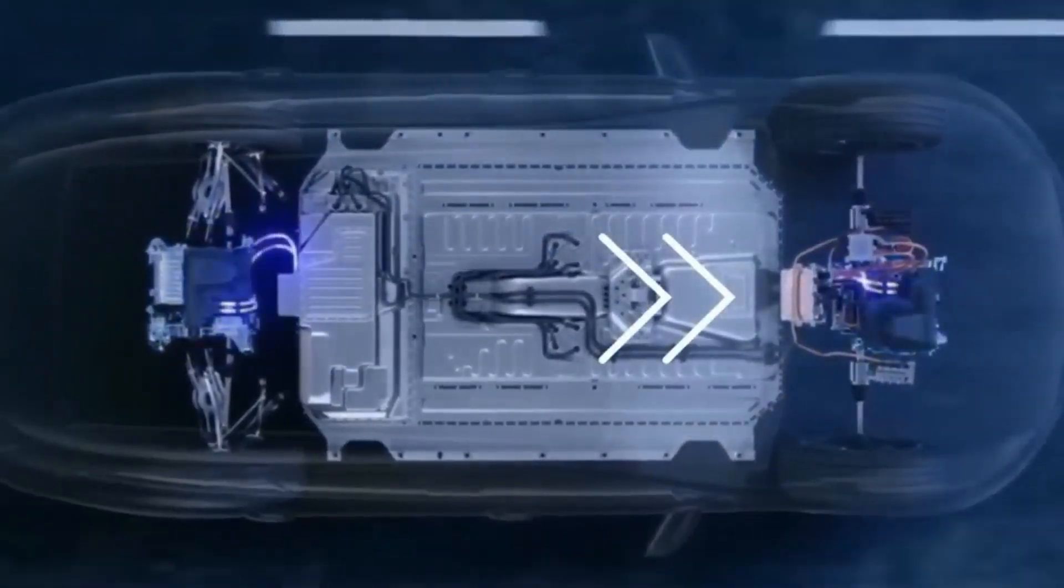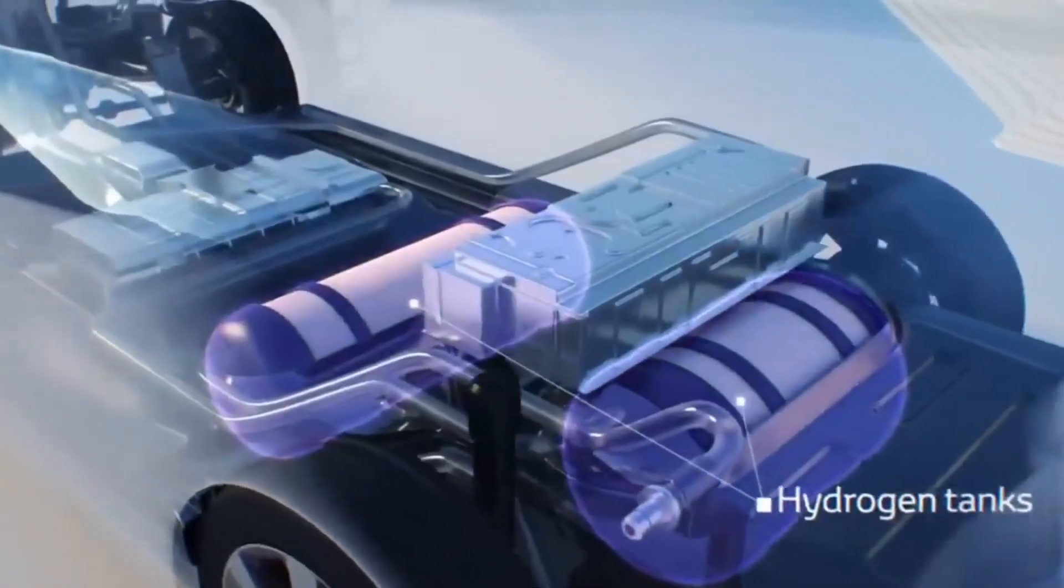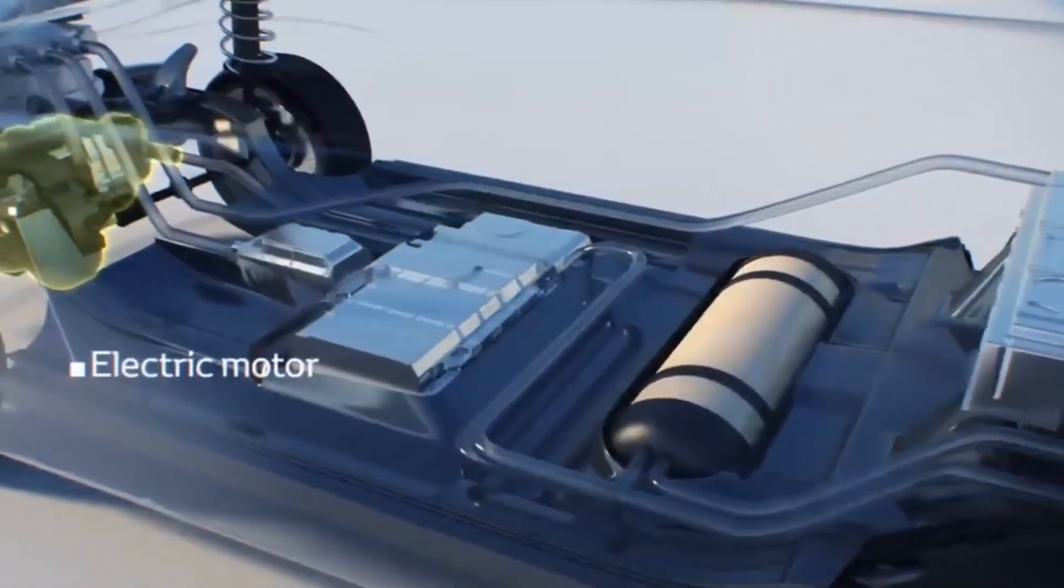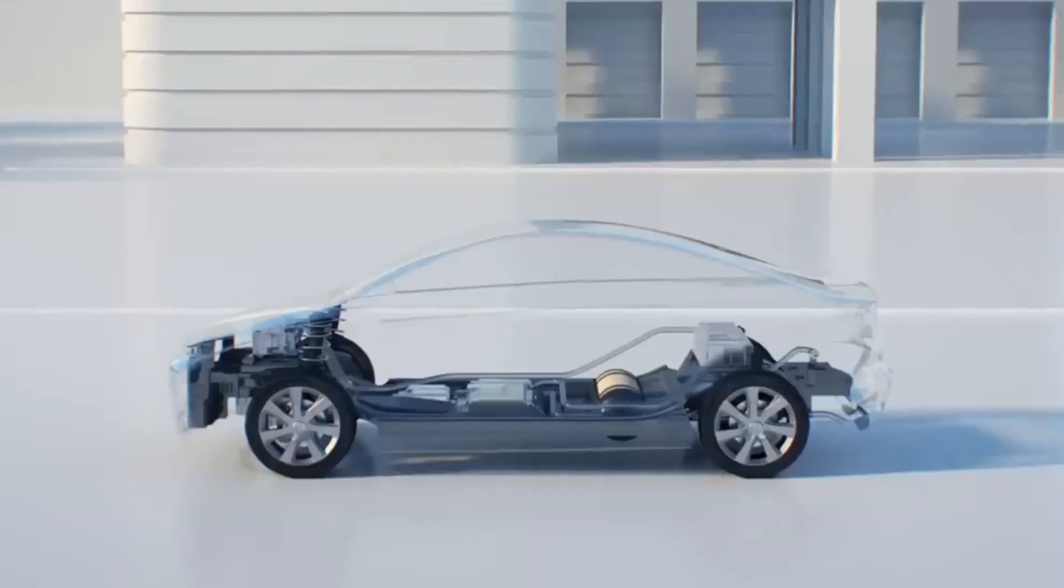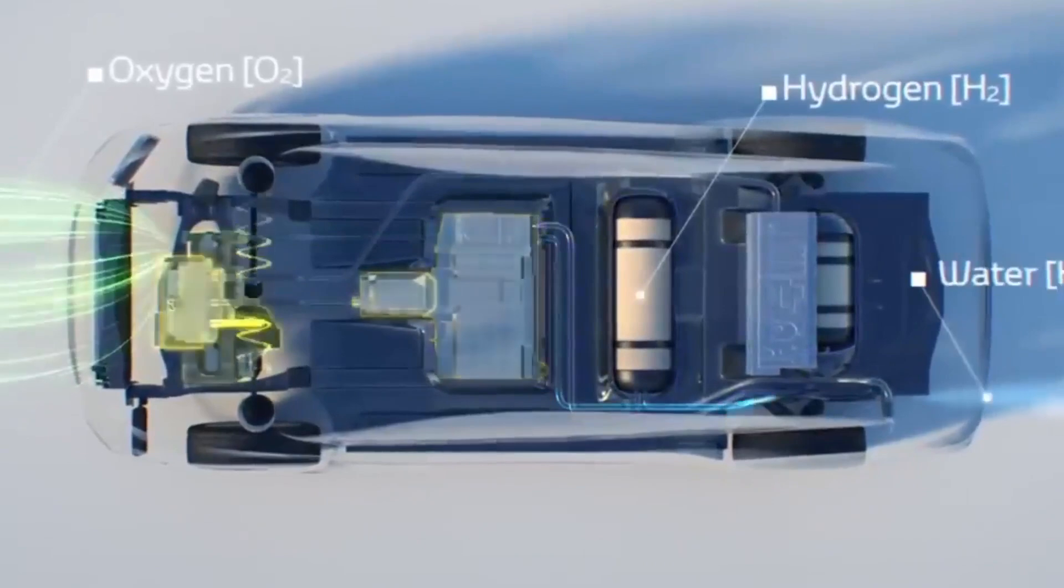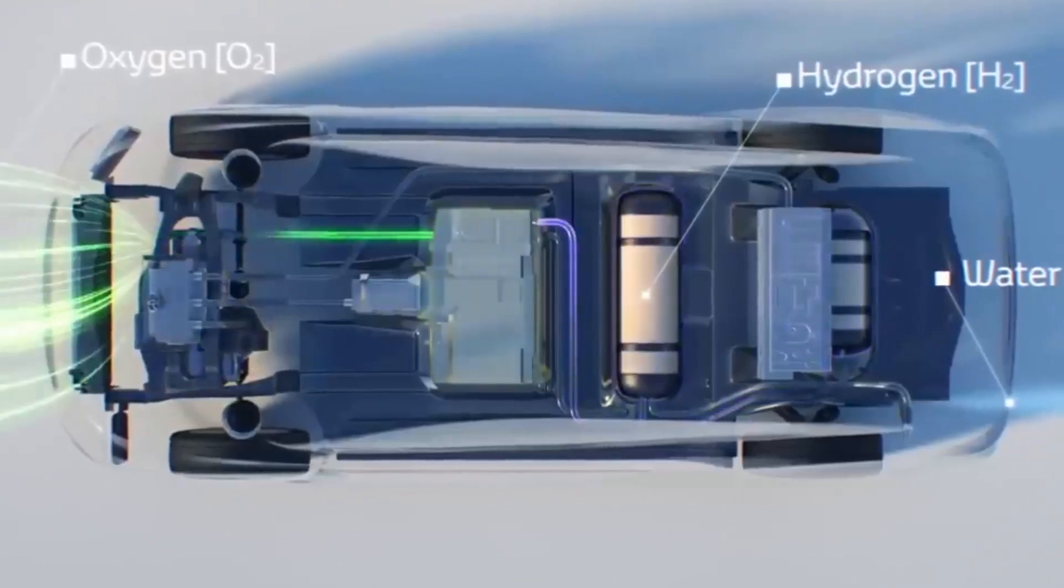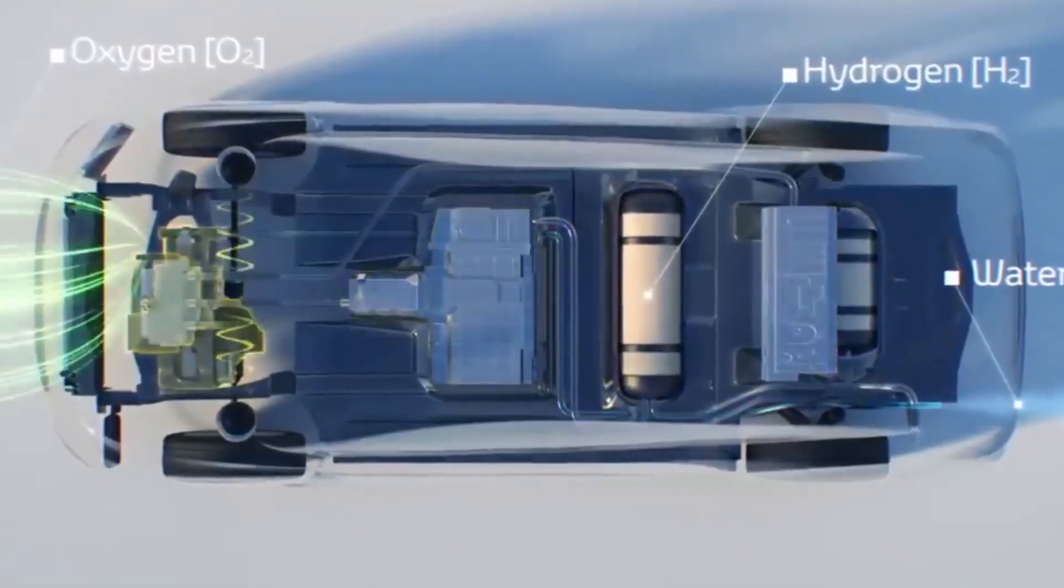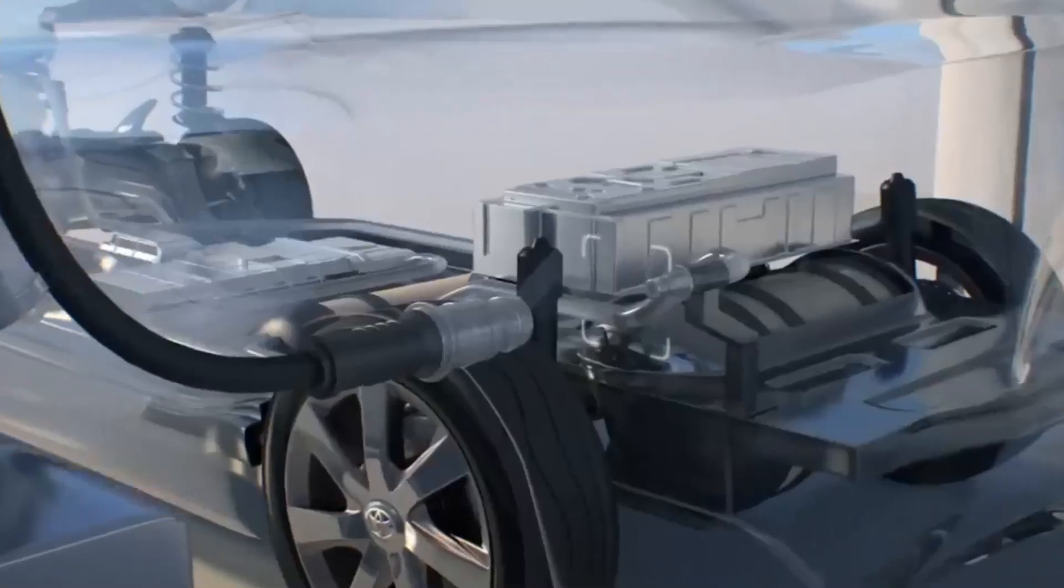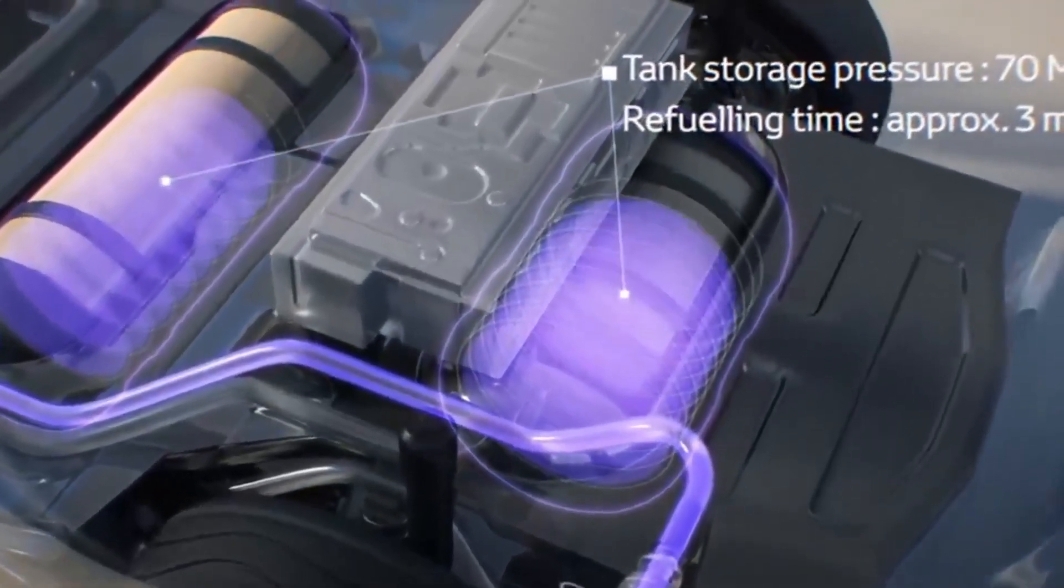Energy efficiency takes center stage in this comparison, revealing inherent differences between the two technologies. Hydrogen faces inefficiency challenges as it doesn't occur naturally—it must be extracted and compressed into fuel tanks. In the process of converting hydrogen fuel to electricity, a significant energy loss occurs. For instance, utilizing 100 watts of electricity from a renewable source like a wind turbine involves electrolysis, which is only 75 percent energy efficient.